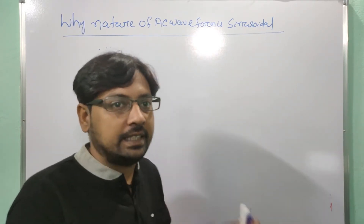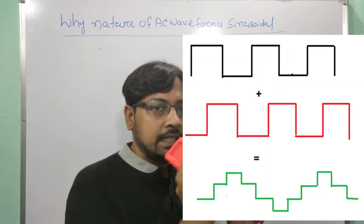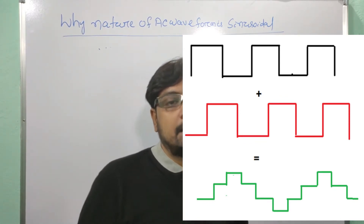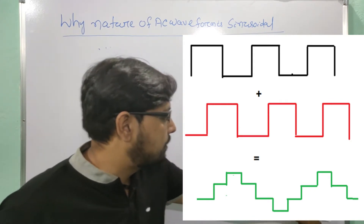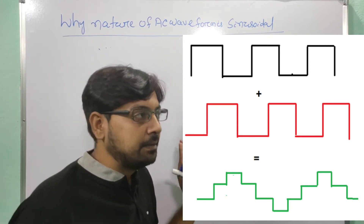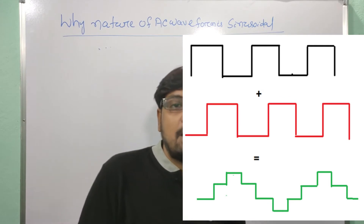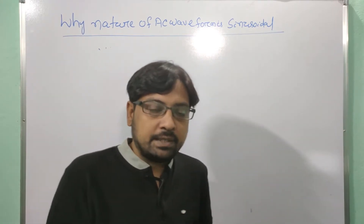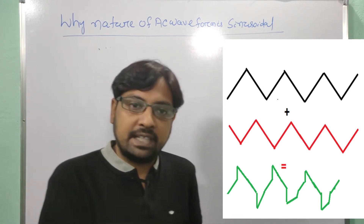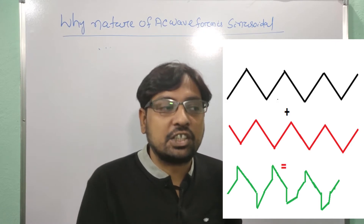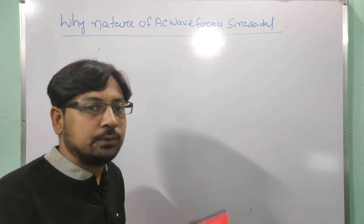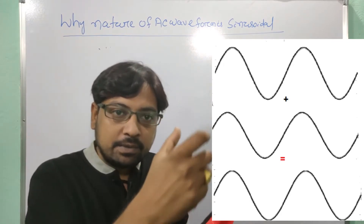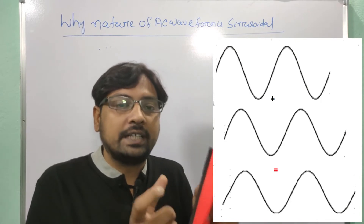Yes — but if you shift one of the two signals from its reference, you will not get the same square wave. If you compare two square waves and one is shifted from its reference, the output signal is not a square wave — it is a distorted waveform. Similarly, if you shift one triangular waveform from its reference, you will not get a triangular waveform. But if we add two sine waves and shift one from its reference, you still get a sine wave.